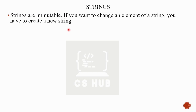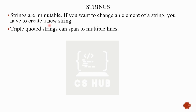The strings are immutable — we cannot change the strings once they are set. We cannot change the value. If you want to change a string, you have to create a new string. Triple quote strings are special because the string can span multiple lines.